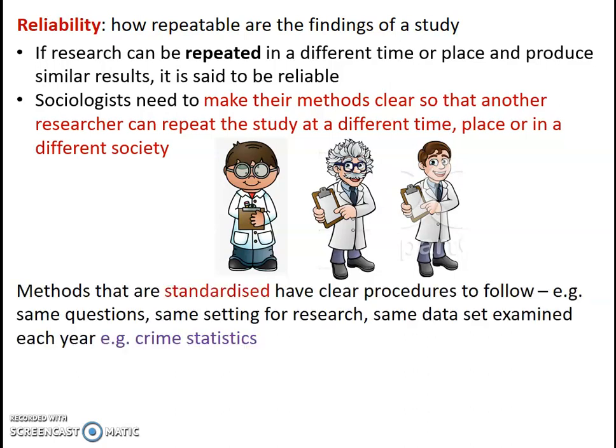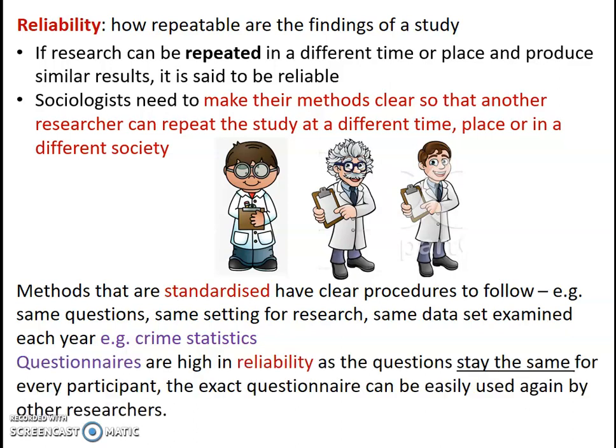Any methods that are standardised — meaning they have clear procedures to follow — tend to be reliable. They might have the same questions, the same setting, or look at exactly the same set of data each year. For example, looking at crime statistics each year to identify whether there was an increase or decrease in crime. Questionnaires are considered high in reliability because the questions stay the same for every participant, and the exact questionnaire can easily be used again by other researchers.